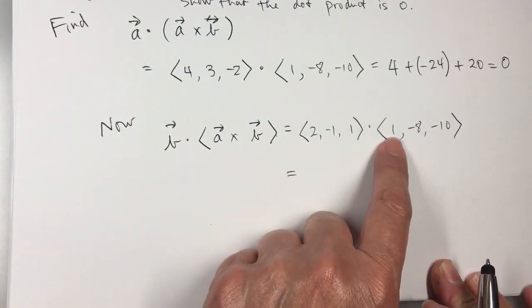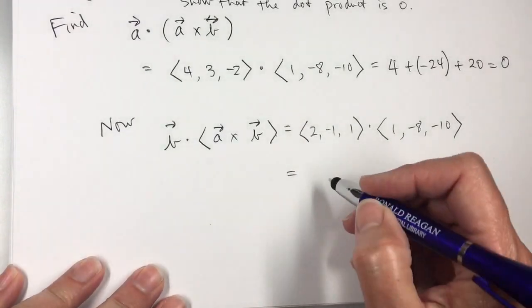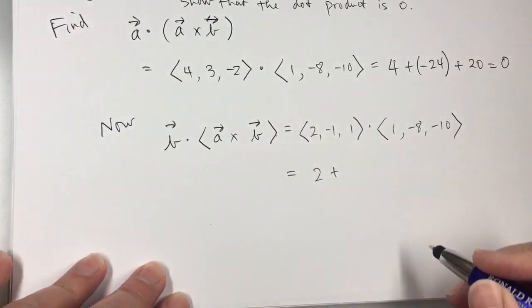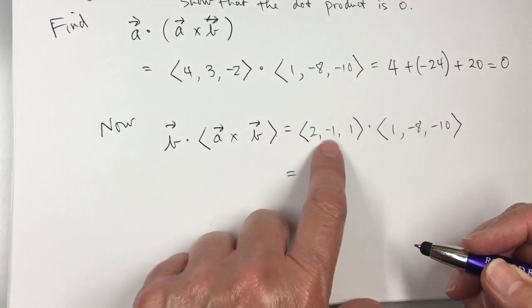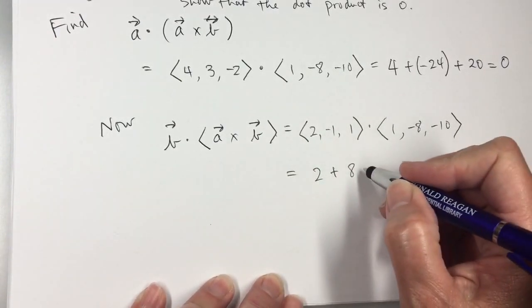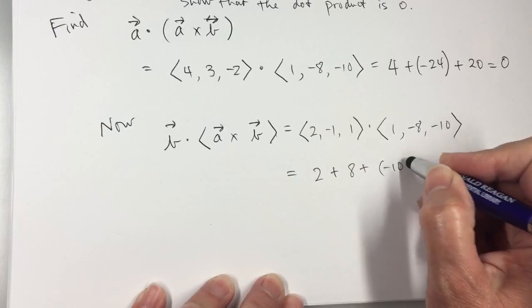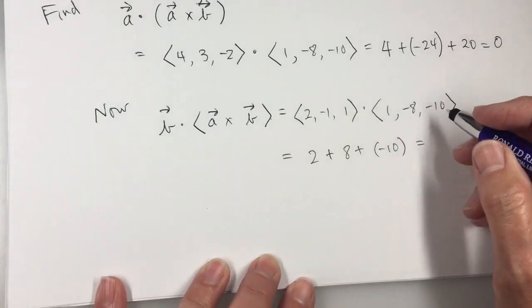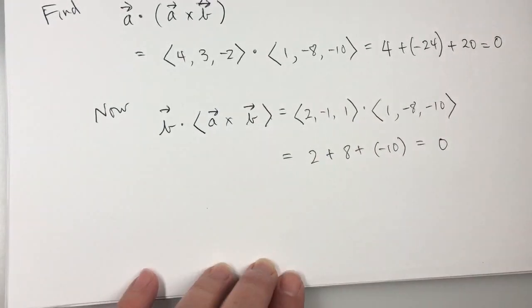So this will be 2 times 1 is 2, negative 1 times negative 8 is 8, 2 plus 8 plus negative 10, 1 times negative 10, and I'll get 0.